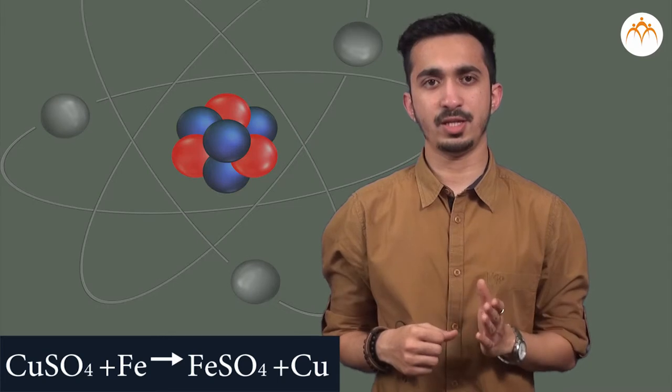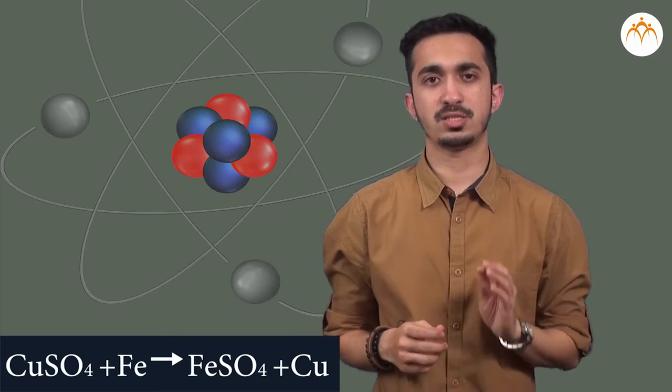The equation of reaction in test tube A is CuSO4 plus Fe gives FeSO4 plus Cu. It is a displacement type of reaction. Iron has displaced copper and turned copper sulphate solution.